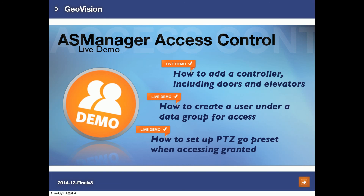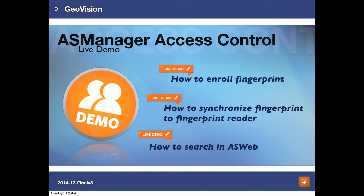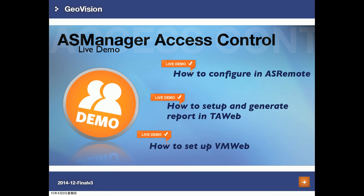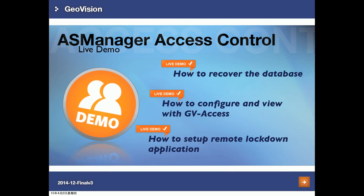For the live demo, a separate video clip will cover: adding door and elevator controllers, creating users under a data group, setting up a PTZ camera to go to a preset on access, enrolling fingerprints on GeoVision fingerprint readers, syncing fingerprints from AS Manager to readers, querying in ASWeb, configuring AS Remote, setting up and generating TA reports in TAWeb, setting up VMWeb, recovering a corrupted AS Manager database, configuring and viewing with the GVSS mobile app, and setting up the remote lockdown application.